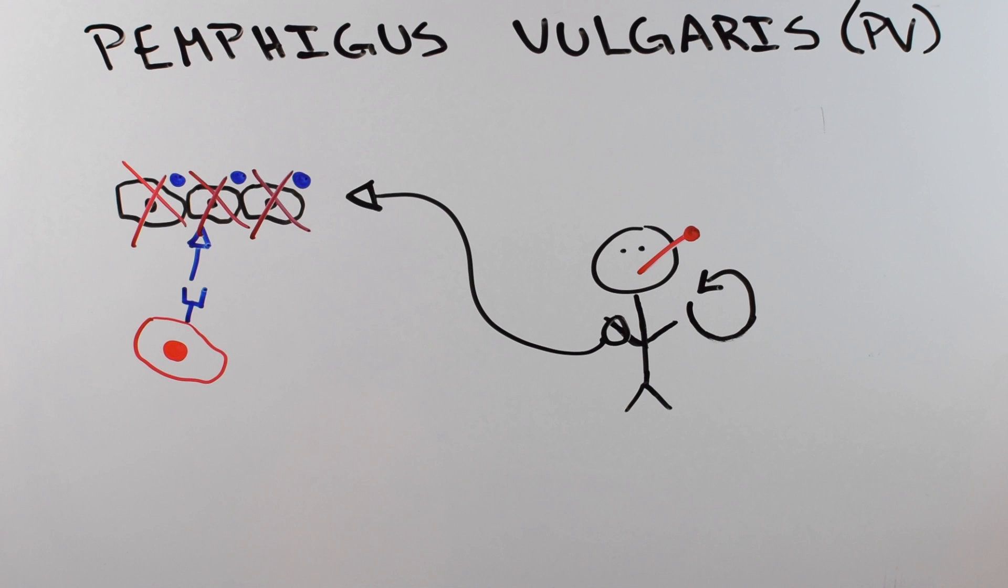The paper outlines a possible treatment where they fight fire with fire. In this case, they fight the disease-causing immune cells with more immune cells. If you can get rid of the disease-causing immune cells, you can cure PV.